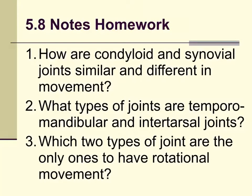5.8 notes homework. Number 1: How are condyloid and saddle joints similar and different in movement? Number 2: What types of joints are the temporomandibular and intertarsal joints? Number 3: Which two types of joints are the only ones to have rotational movement?